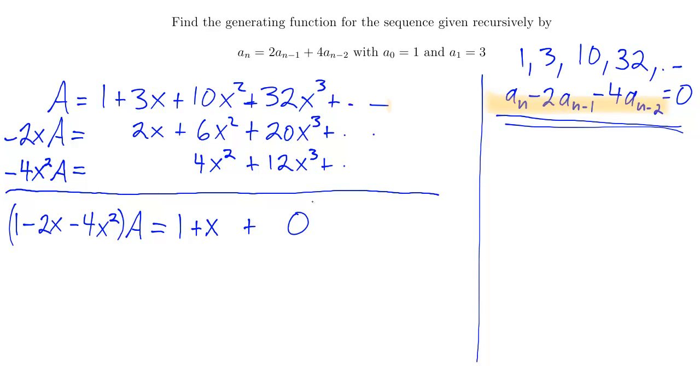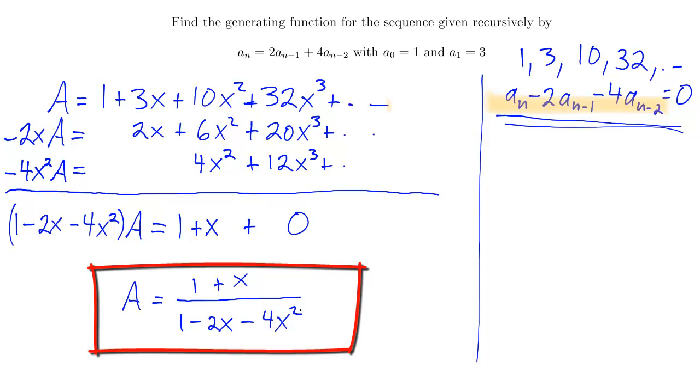Okay, well this is good. I've simplified the right hand side of my generating series, and now I can solve for A. I get A is equal to 1 plus x divided by 1 minus 2x minus 4x squared. And there I have it. That's my generating function.